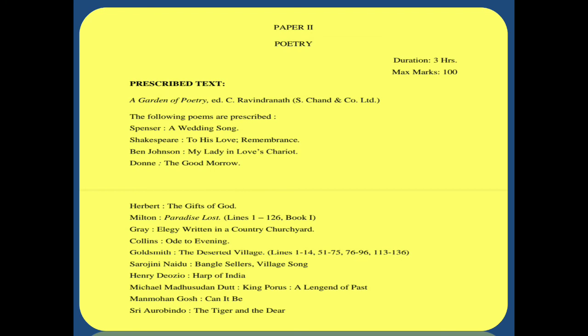And then we have Sarojini Naidu, Henry Derosio, Michael Madhusudan Dutt, Manmohan Ghosh, and Sri Aurobindo. These are all poets of Indian origin, except Henry Derosio, who is of English and Portuguese origin. But he spent his entire life in India, so he is better known as an Indian poet. I can assume that you must have read and heard about some of these poets. And the poets and poems that you haven't heard or read about, you will get to know now when we take them up in detail, one by one.